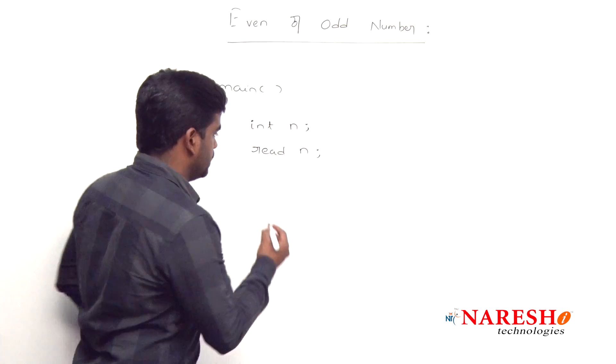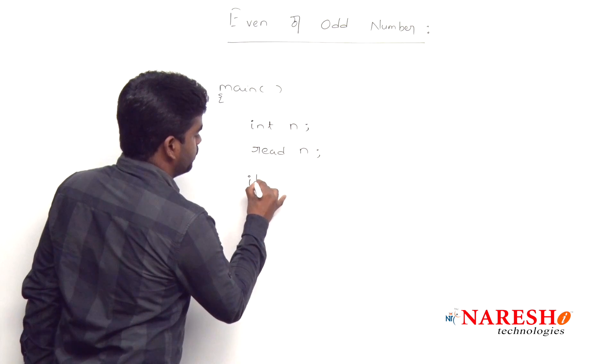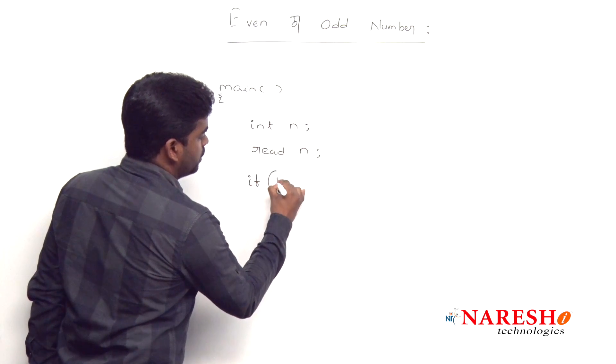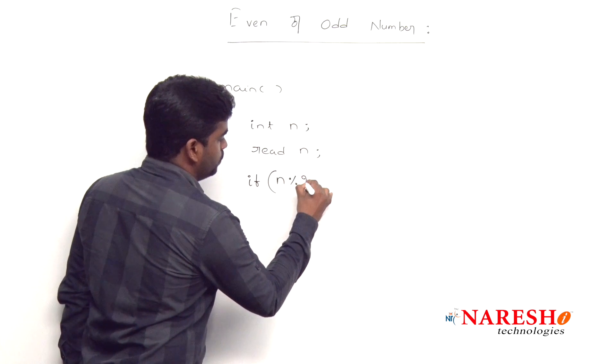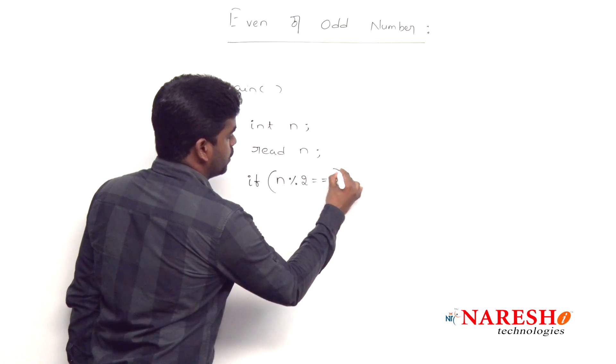In the if condition, if the number what we have entered is divisible by 2, n mod 2 equal to 0.